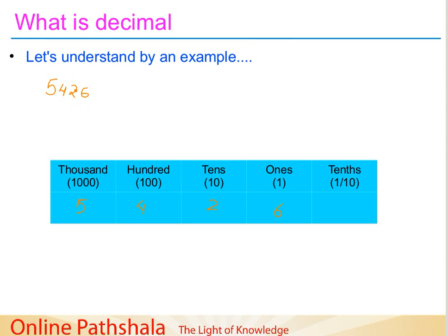Each column in a number is 10 times bigger than the one on its right. So here, if you see this column, it is 10 times bigger than the column to its right. This is 10 times bigger than this one, and the thousands column is 10 times bigger than the hundreds column. So with each passing column, it grows by 10x — it increases by 10 folds.